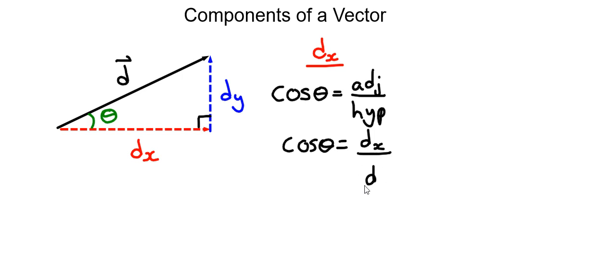And we can do so by, instead of dividing by D, the opposite operation is to multiply. So we can multiply both sides by D. And in doing so, I will have a cancellation that occurs on this side. The result is, therefore, that DX is equal to D cos theta. So this is an equation that we have now for DX.